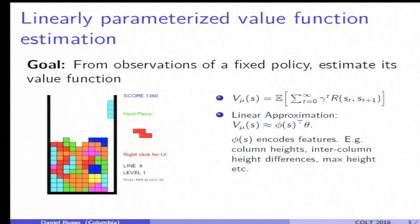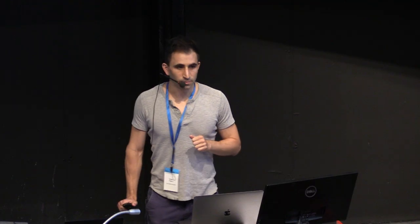Now for Tetris, we can come up with decent handcrafted features, things like the heights of the columns, the differences between the heights of the columns, the maximum of the heights of the columns. And I could think of predicting the discounted reward to go as some linear combination of those features.